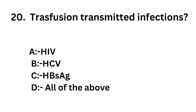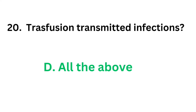Question number 20: Transfusion transmitted infections — option A: HIV, option B: HCV, option C: HBsAg, option D: All of the above. Which of the following infections can be transmitted during blood transfusion? The correct answer is option D, all of the above. HIV, HCV and HBsAg can all be transmitted by transfusion.